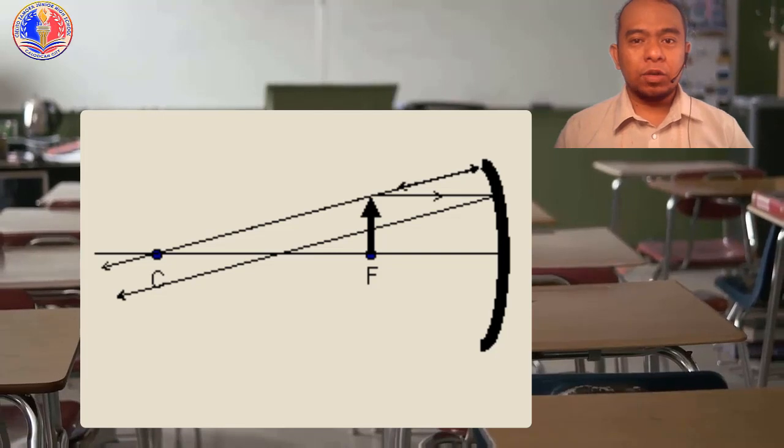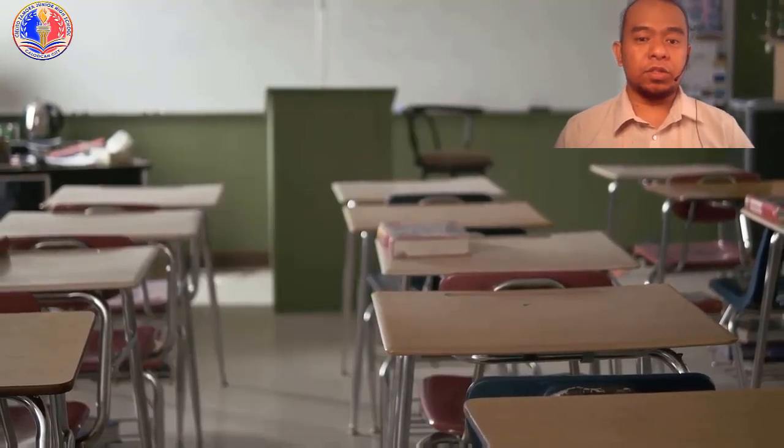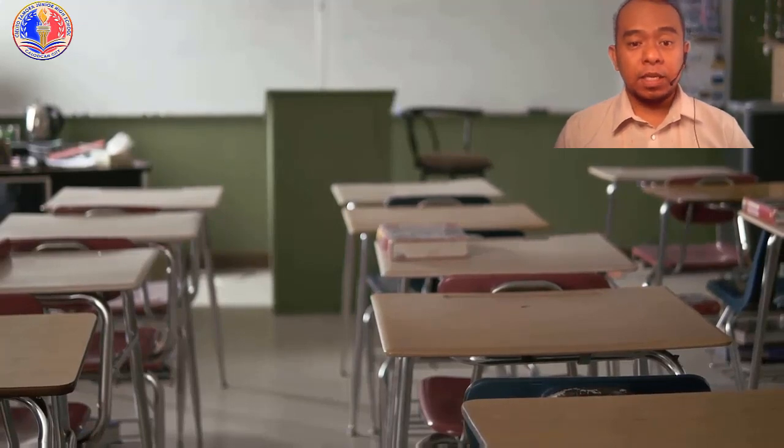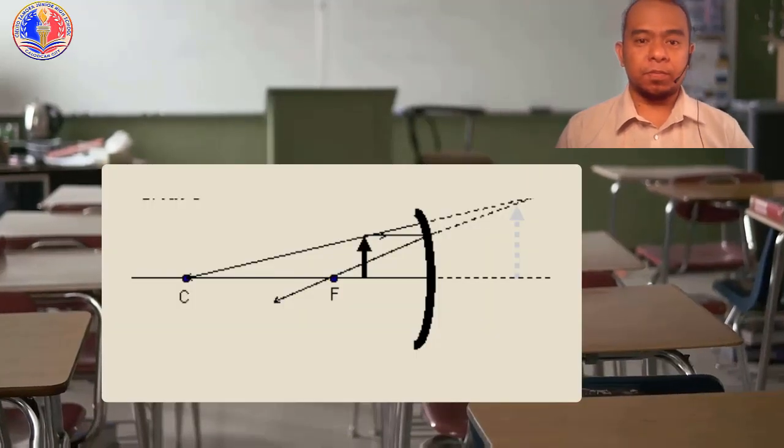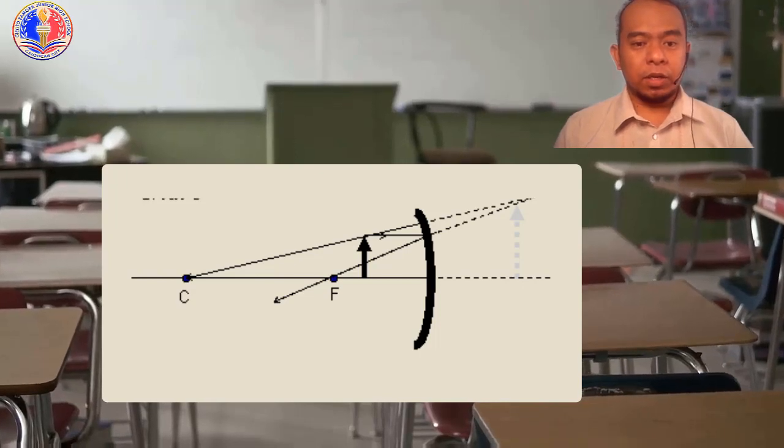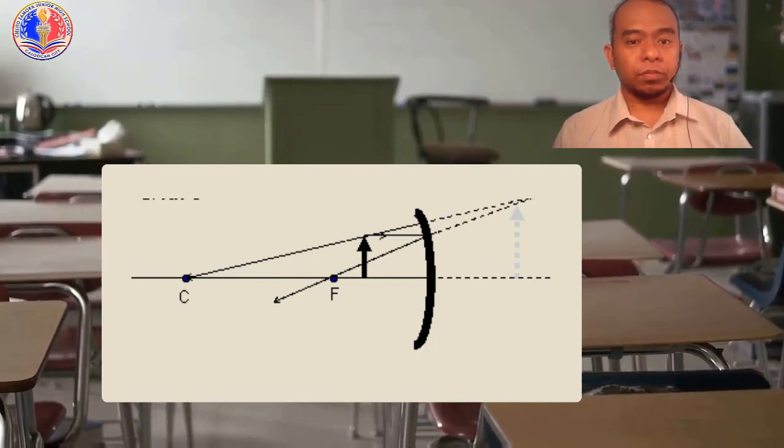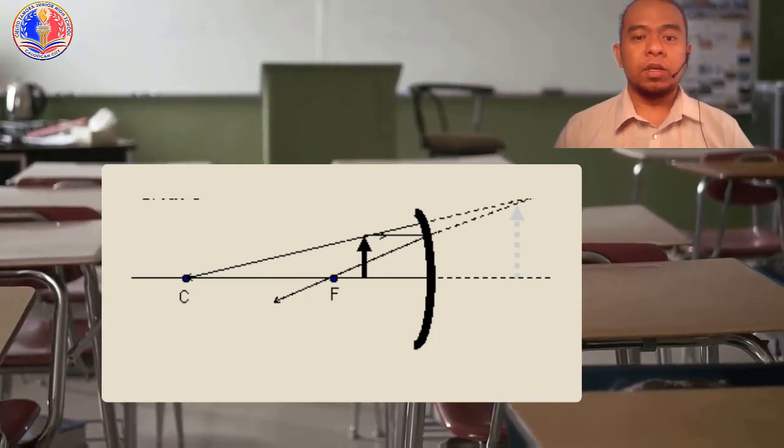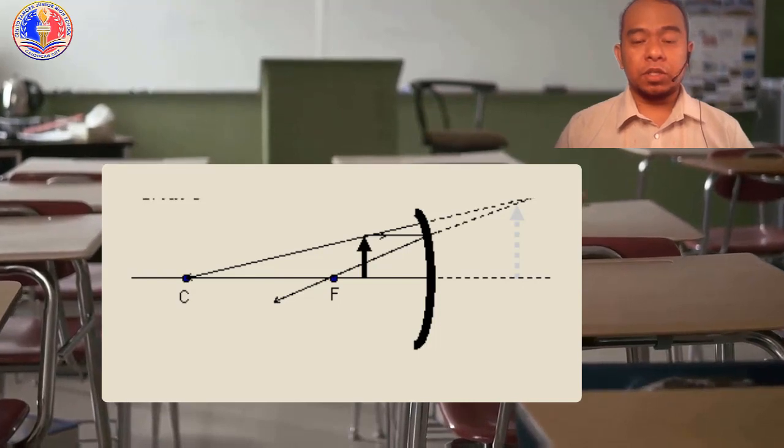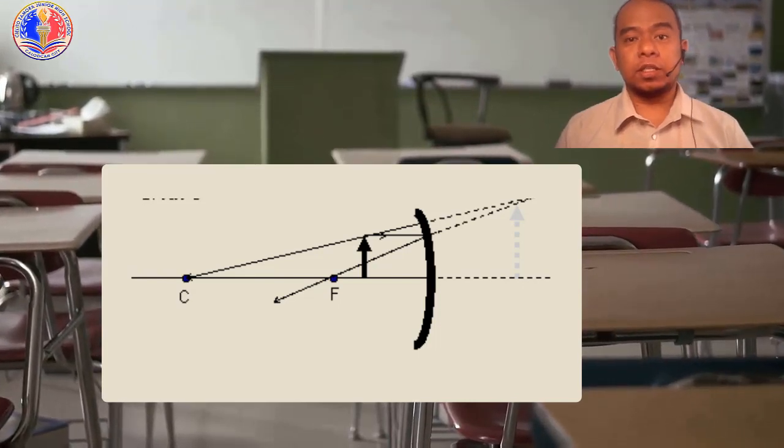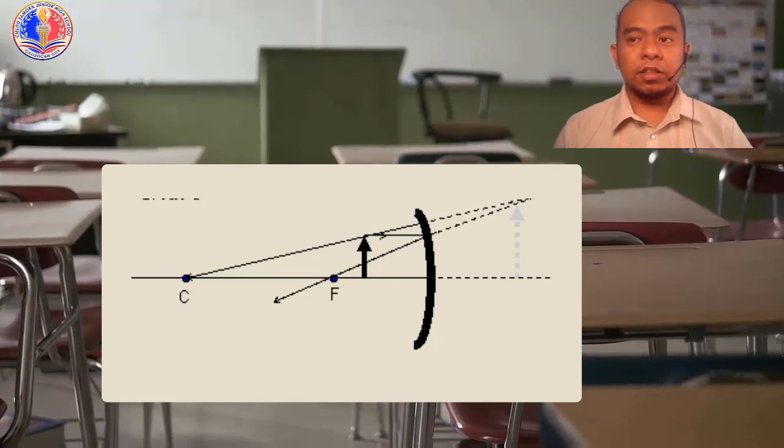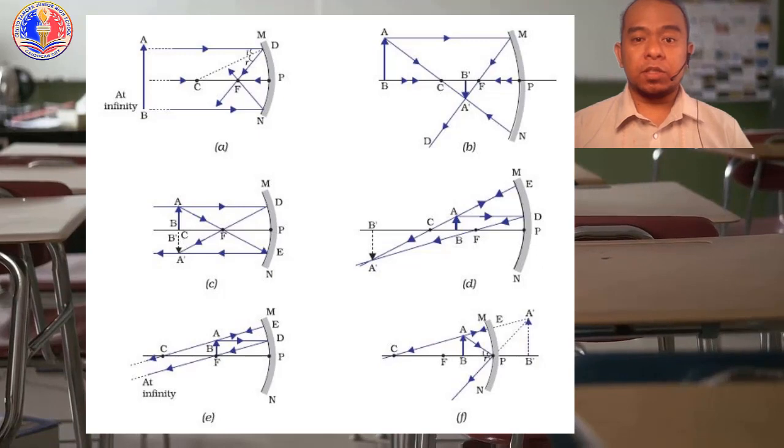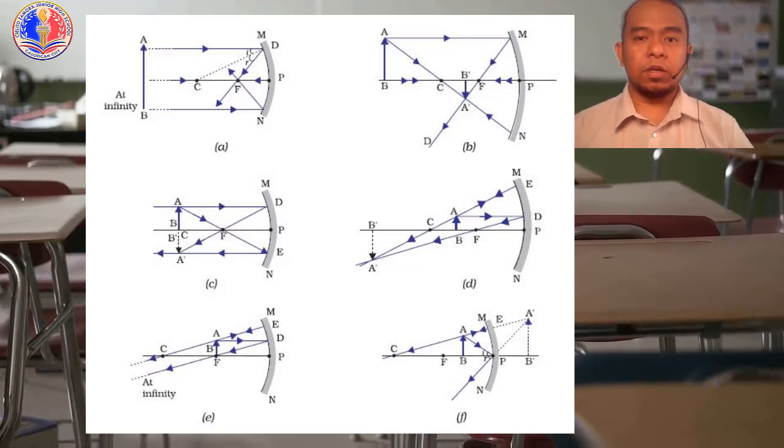So when do we have virtual and erect images? If the object is positioned between P and F. P is the principal axis. So the position of the image is behind the mirror, and the size of the image is enlarged, and the nature is erect and virtual. Those are the summary of the images formed in a concave mirror.